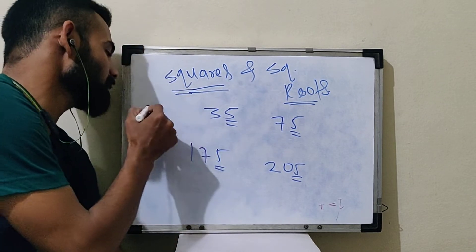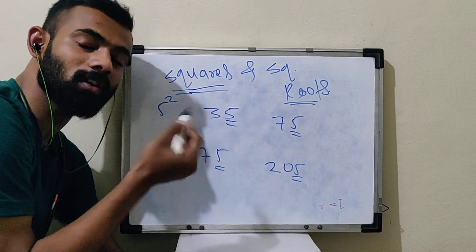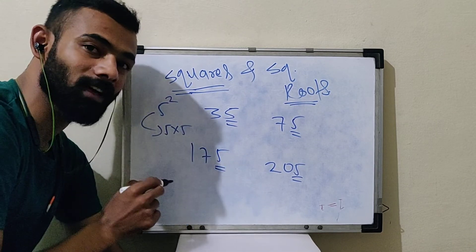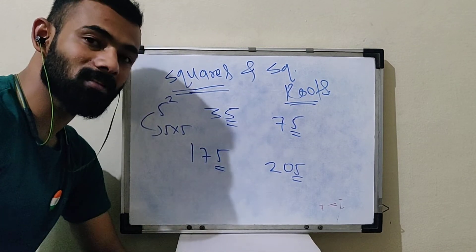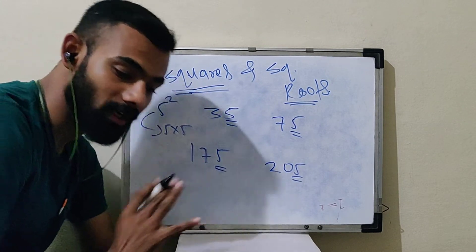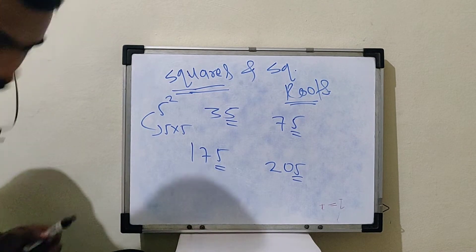Squares method, for example, we take 5 square, what is the method? What is the traditional method? Five multiply by five. This is the method. But what are different methods? That's what we are going to see today.